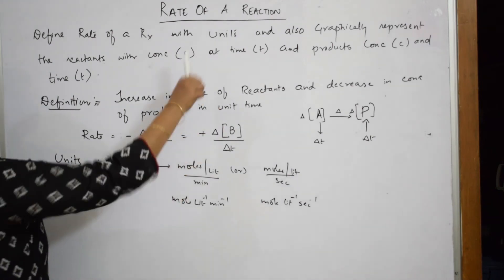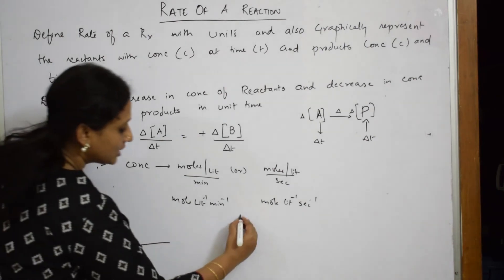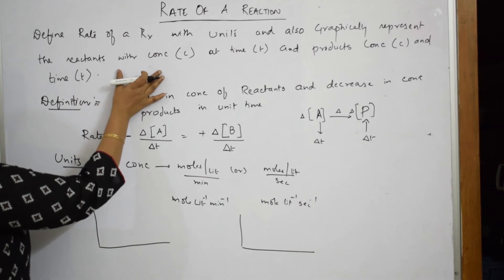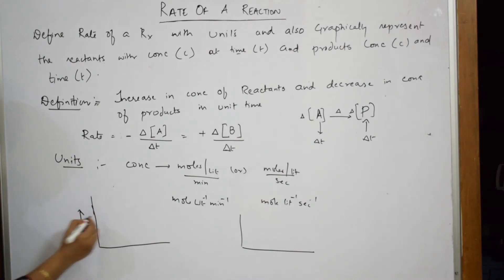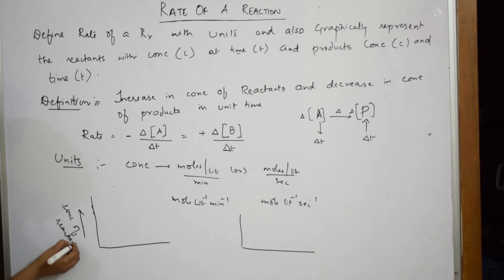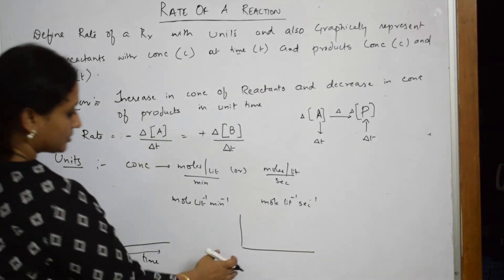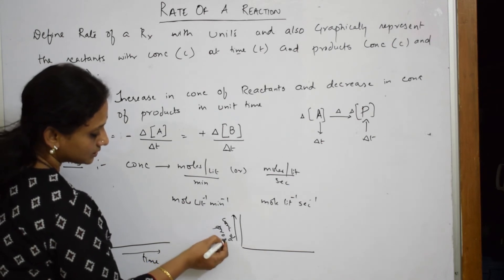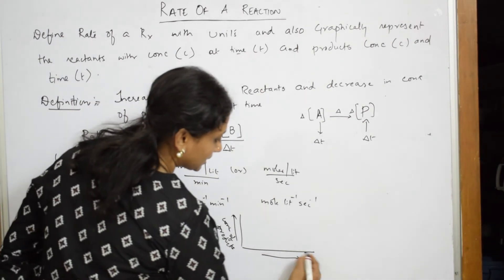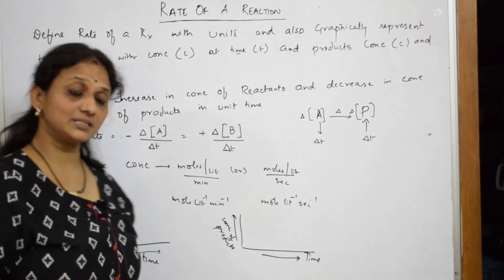Now what do they ask me? They have to show this graphically. I have two things: one is I have to draw a graph for reactant concentration versus time, and one for product concentration versus time. On the x-axis you have time, and on one graph this is concentration of reactants, and on the other this will be concentration of products — both versus time. Observe what they want us to show and then start making the graph.